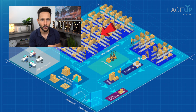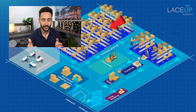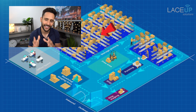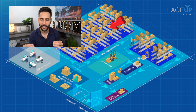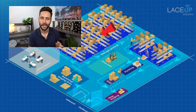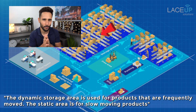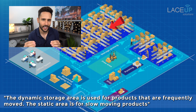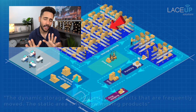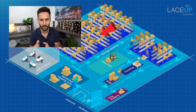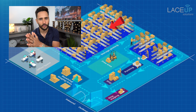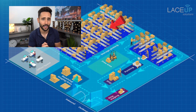The dynamic storage area is normally used for product that moves, that gets picked, that rotates. Whereas the static storage area is meant to store product that doesn't move that frequently — product that could sit there for a couple of months. Sometimes product transfers from the static to the dynamic storage area.